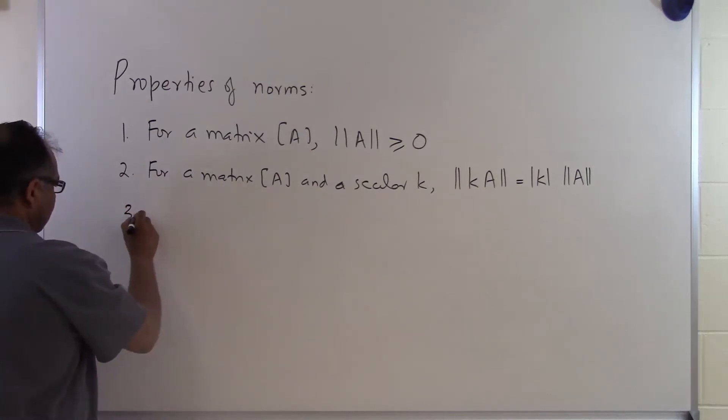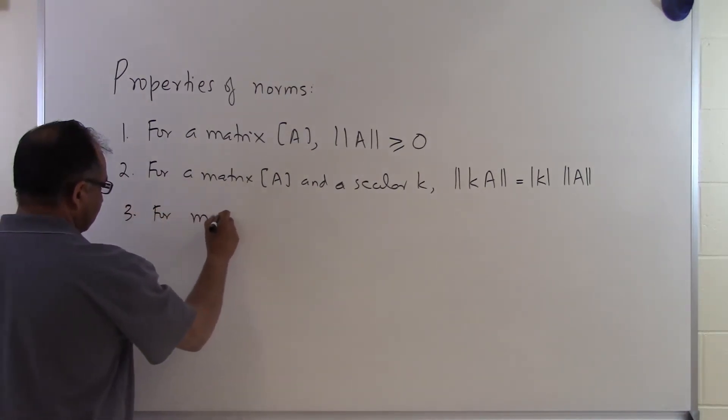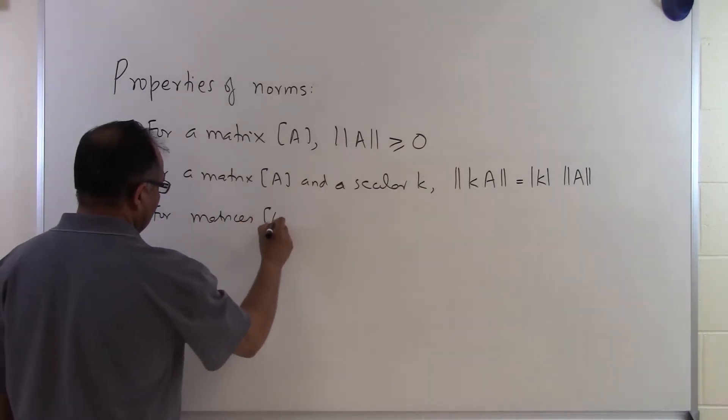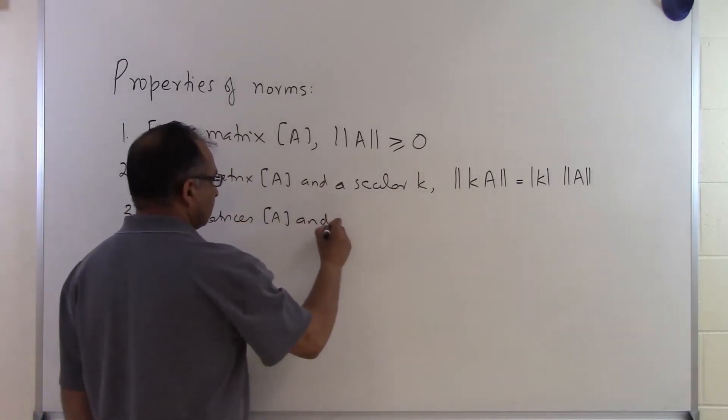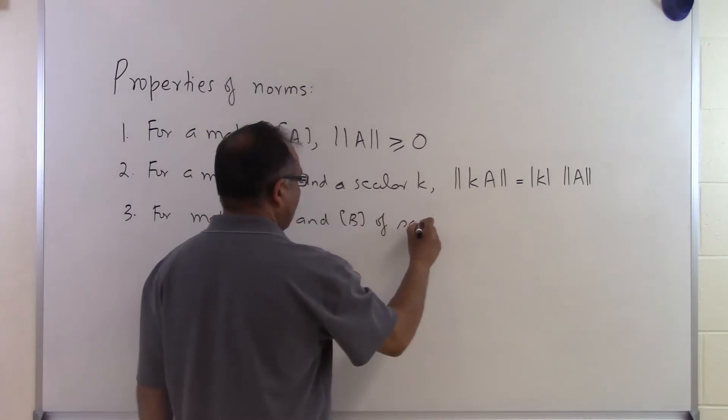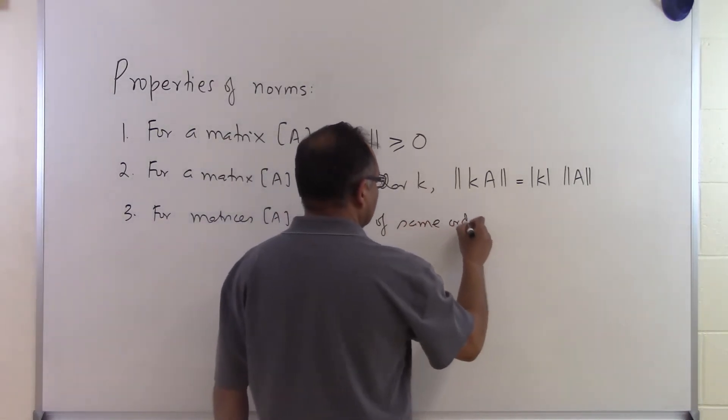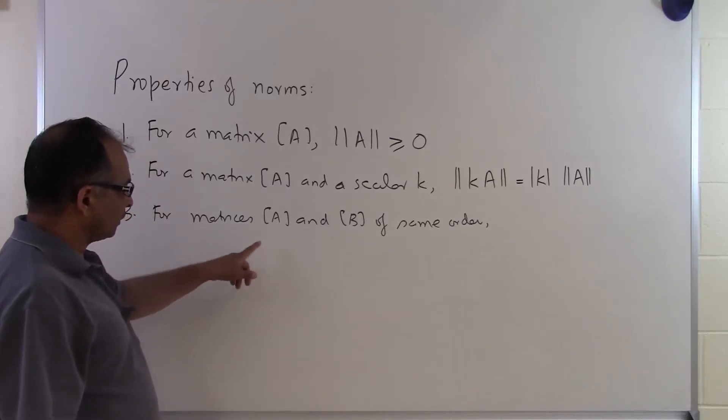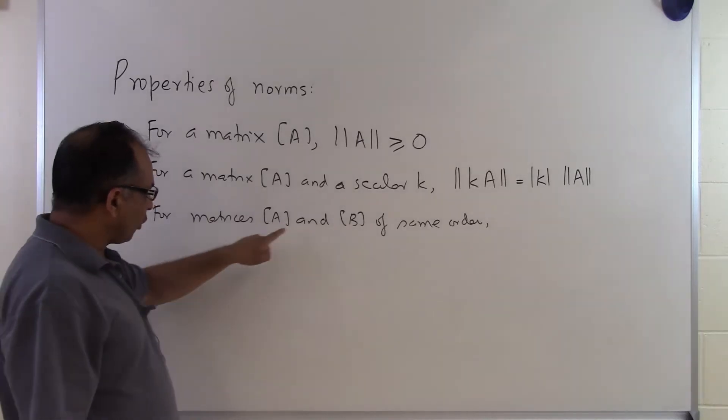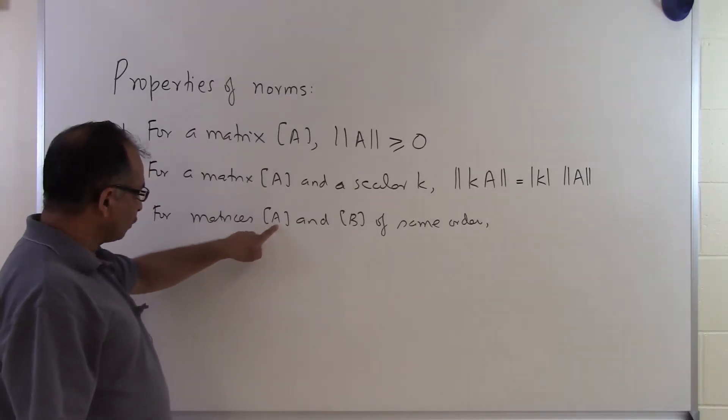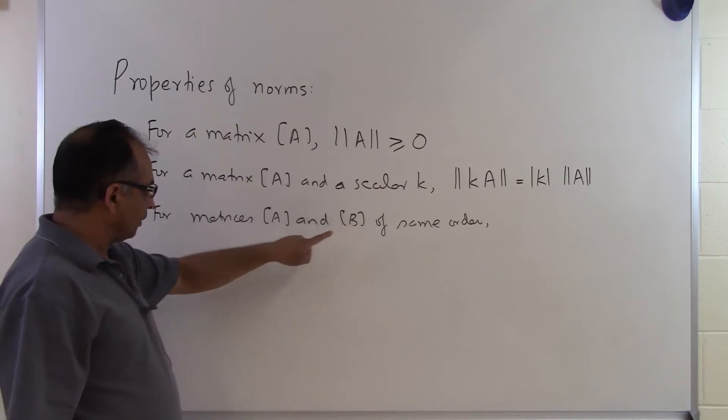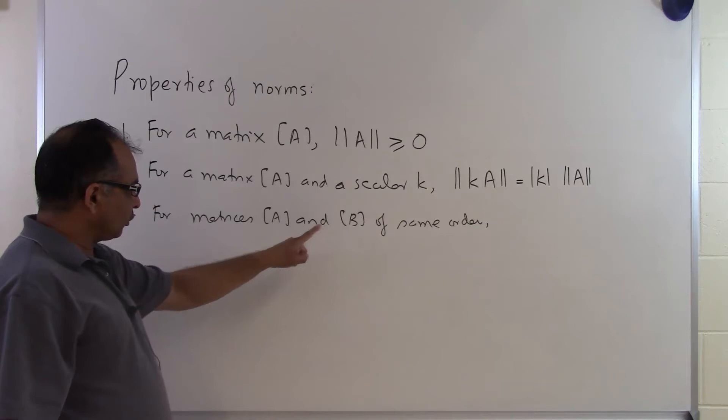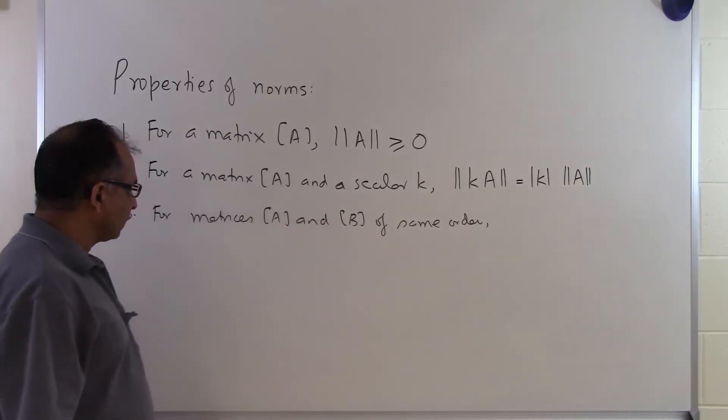The third one is for matrices A and B of same order. The reason why we are talking about the same order is because we are going to talk about a property which is related to the addition of two matrices. We know that A and B can only be added if the number of rows of A is the same as the number of rows of B, and the number of columns of A is the same as the number of columns of B. So that is the only time when we can add two matrices.